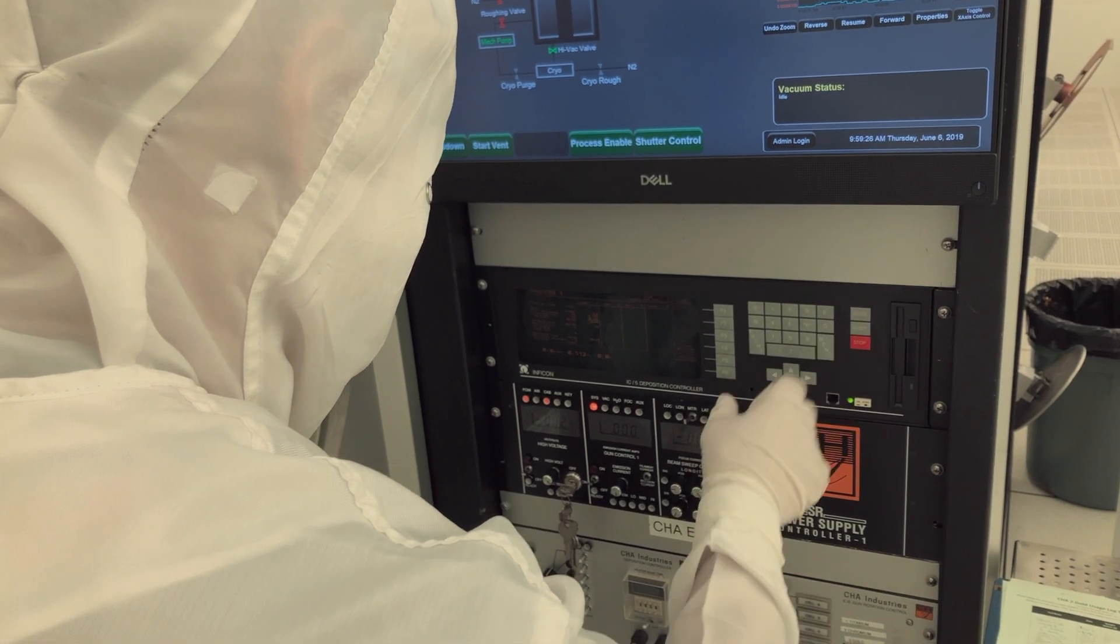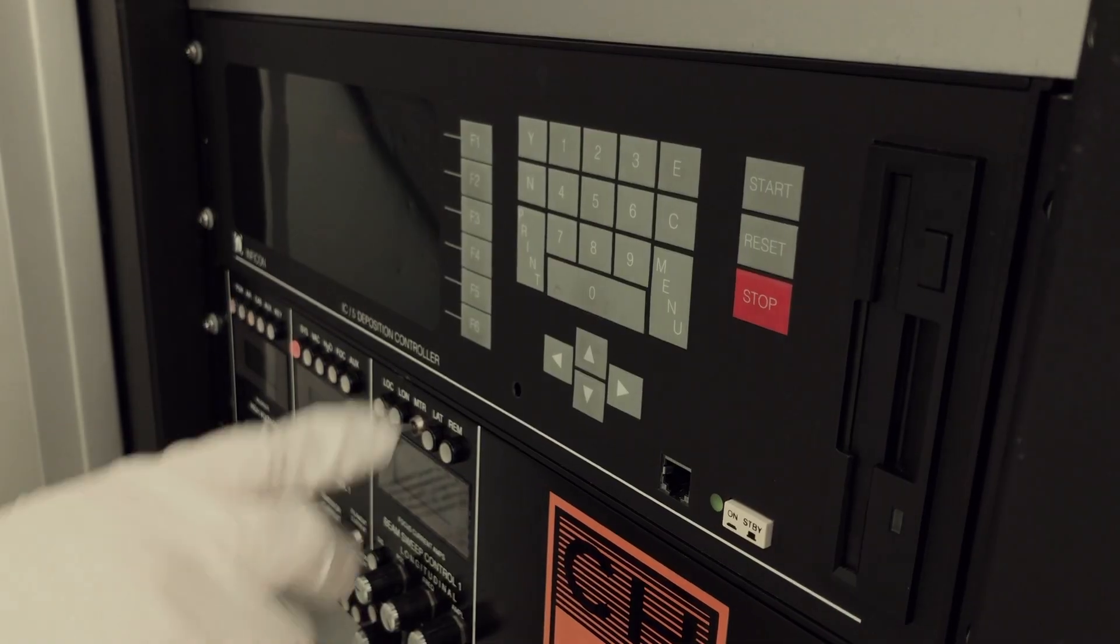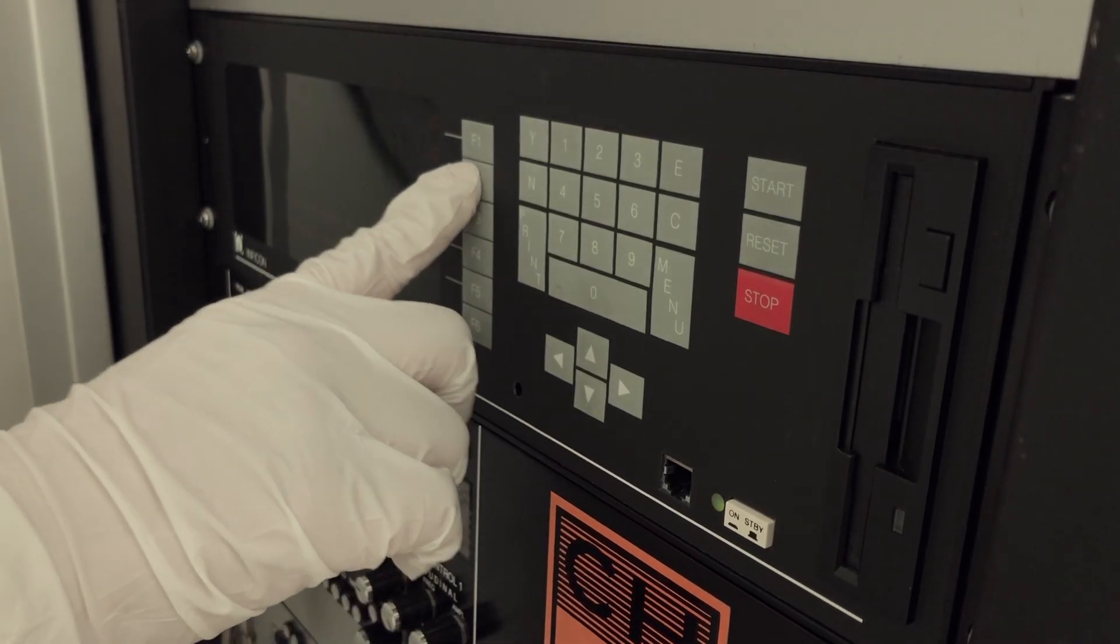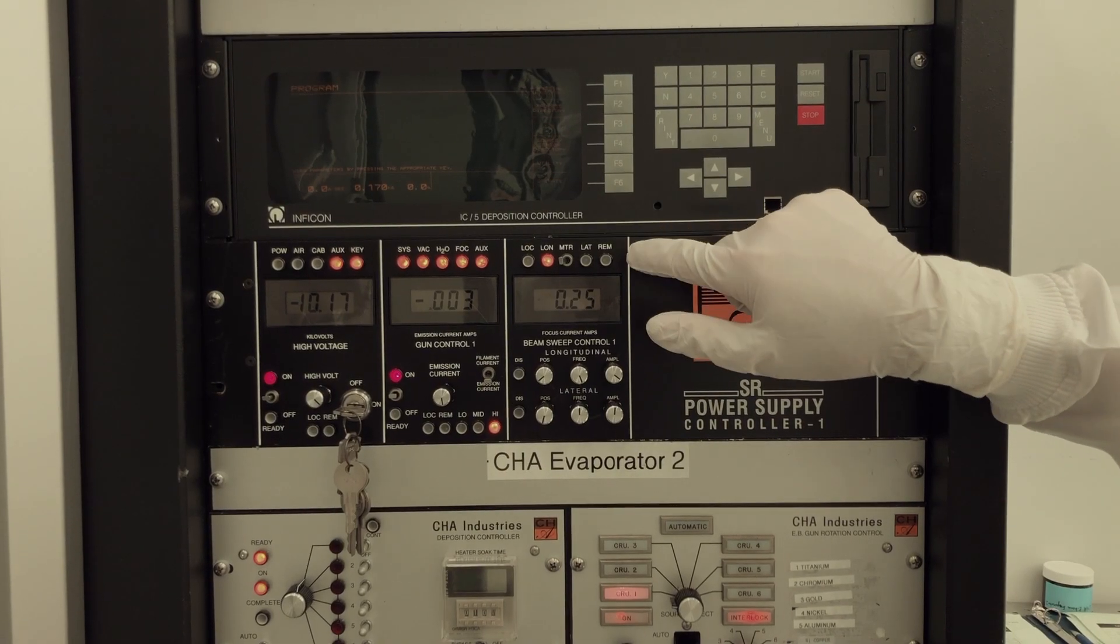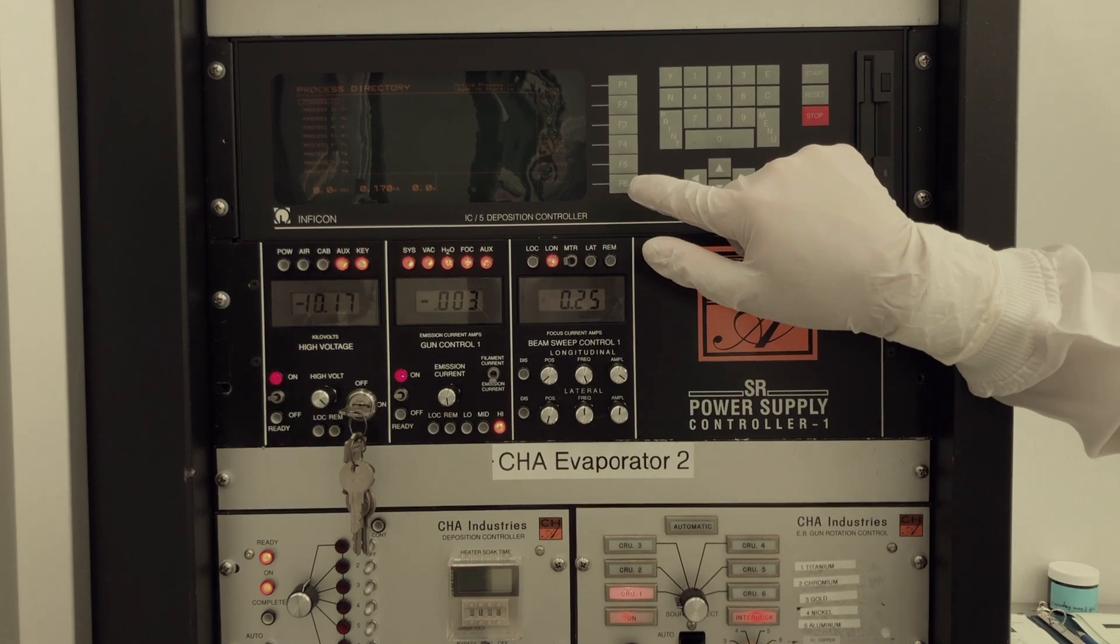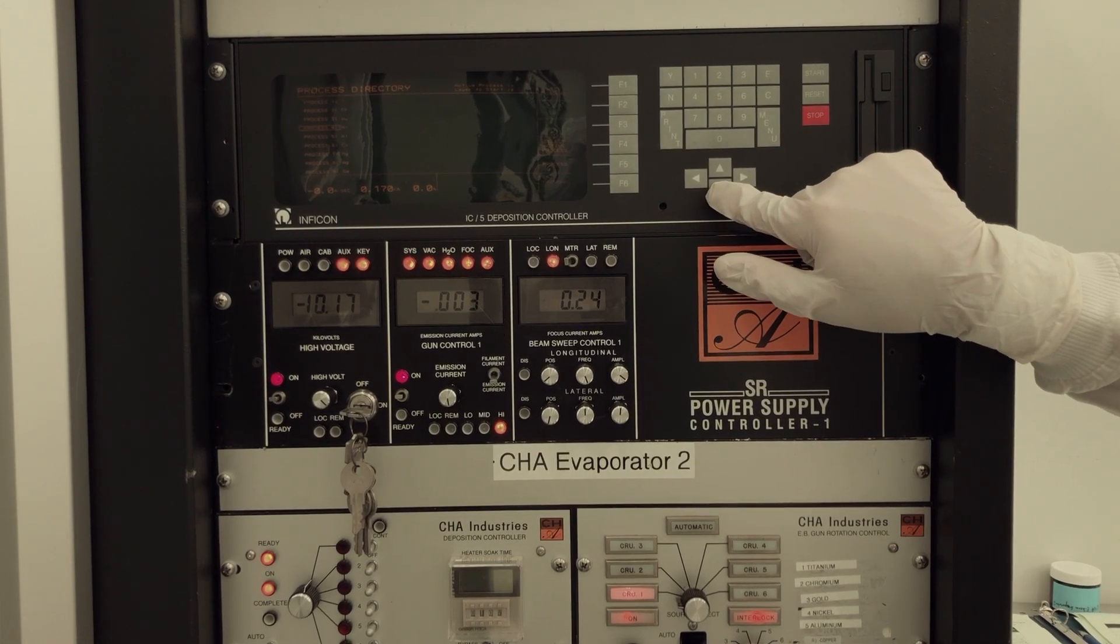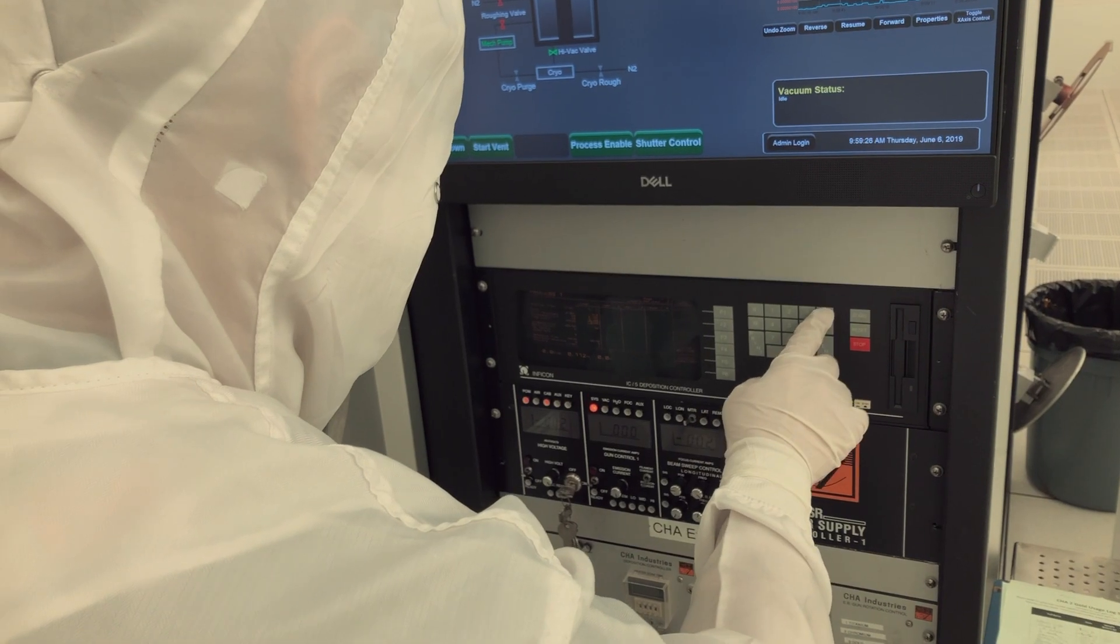After you have set up the material, press F6 for process directory to return to the list of materials. If you wish to set up any other materials, follow the same steps. Highlight the first material you are depositing and press F4 for select active. This will set this material as the active process. The number of the active process is displayed at the top of the screen.